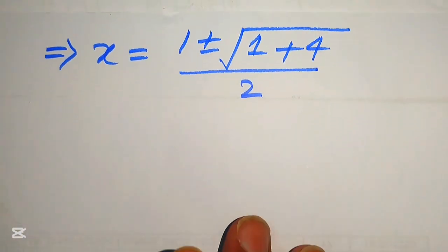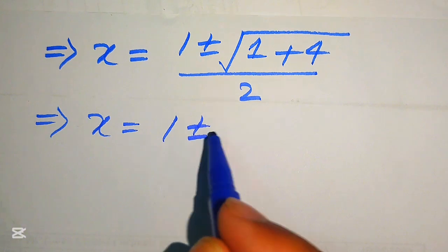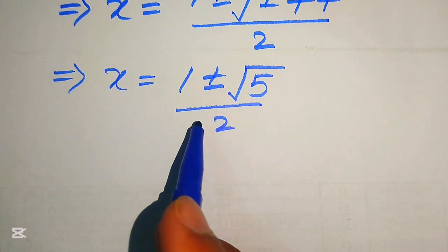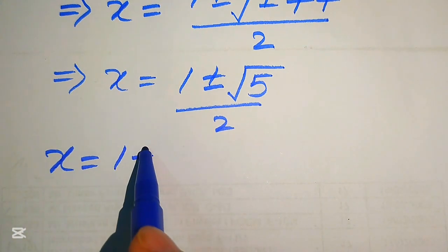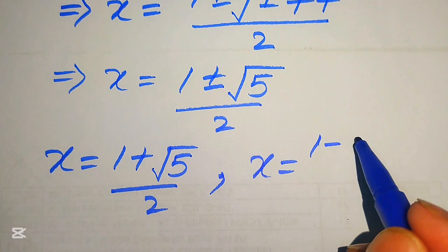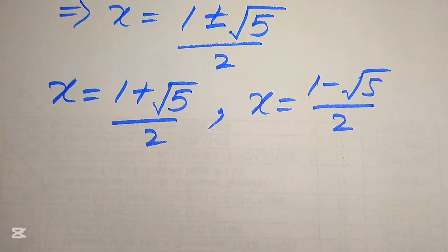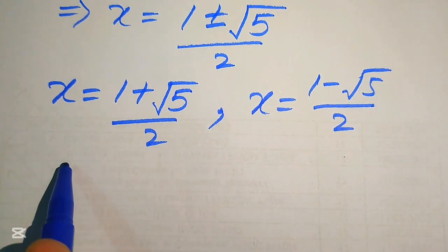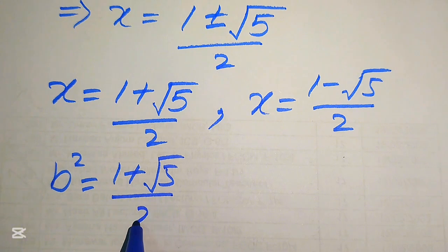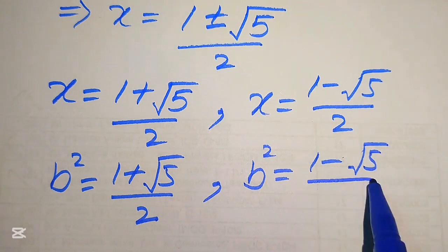Simplifying, we get x = (1 ± √5) / 2. Back-substituting x = b², the two cases are: b² = (1 + √5)/2 and b² = (1 − √5)/2.